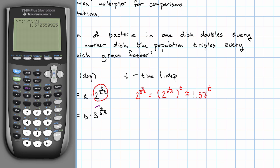In the second dish, our multiplier, we've got 3 to the T over 3.3. So that'll be 3 to the 1 over 3.3 to the T, which is about 3 to the 1 over 3.3. That's about 1.40 to the T.